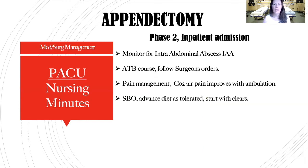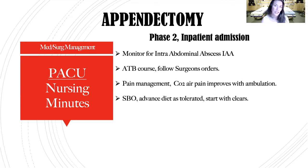For Phase 2, the patient gets admitted to the hospital if they had a rupture. Continue monitoring for infection and intra-abdominal abscess formation, follow antibiotics and pain management, and get them ambulating to help reabsorb the CO2. That can actually take three to five days, so prepare your patient mentally for that.